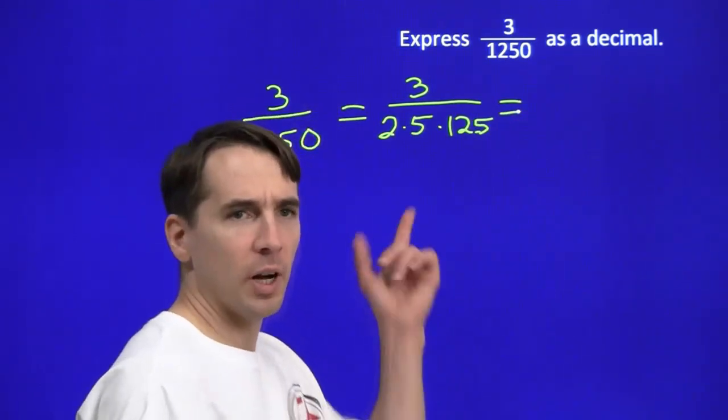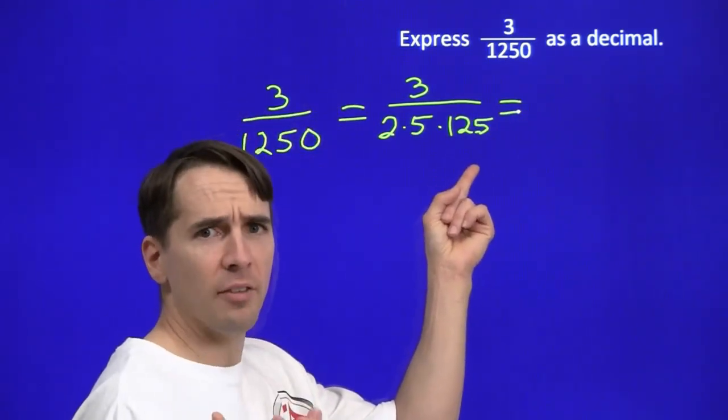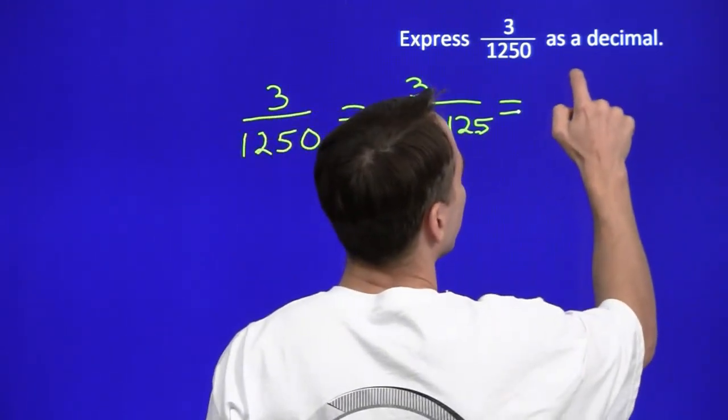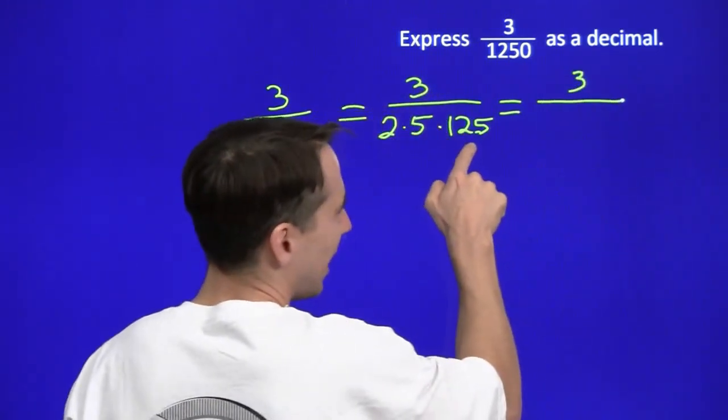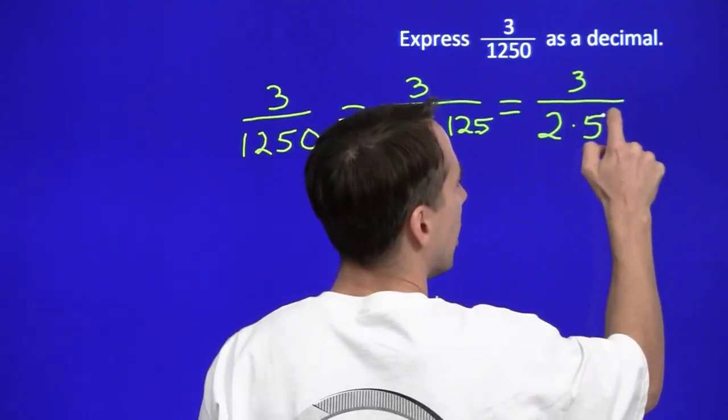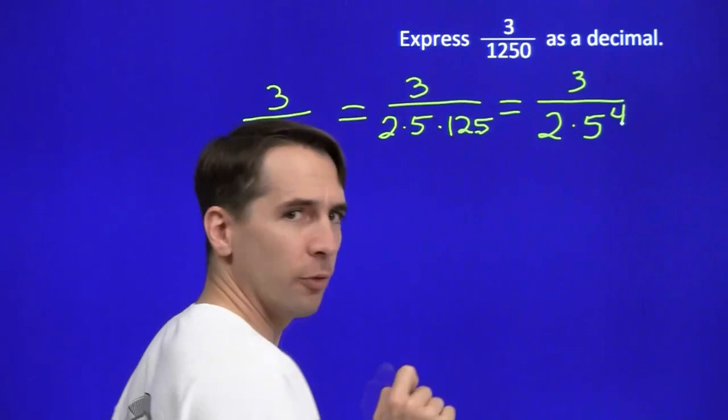Well, we just saw 5 times 25 is 125. And 25 is 5 squared. So 125 is 5 cubed. So I take that 5 cubed and put it with this 5 that we already have down there. And this is 3 over 2 times 5 to the 4th.